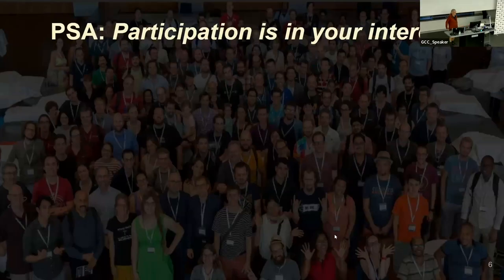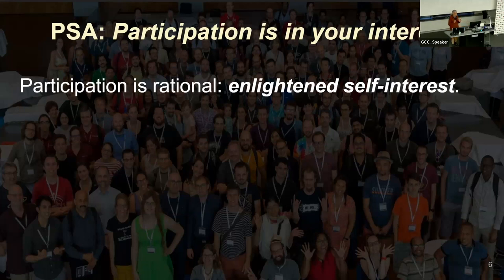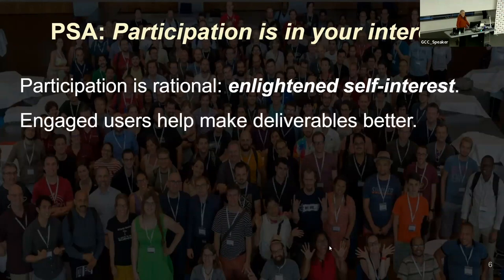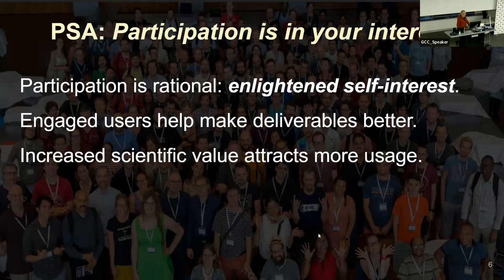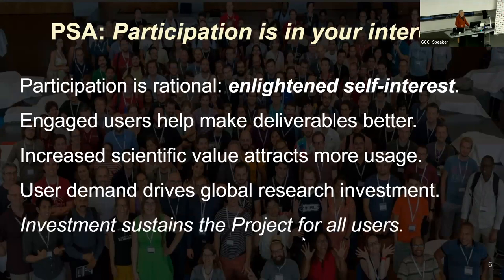Our future sustainability doesn't depend on individual components — it depends on the project infrastructure, which connects all these independent components. None of the independent components has control of the others; no single PI controls all the grants. All that coordination happens at a higher level because collaborators all agree to work through this project entity. Efficient collaboration is surely the major element of our next 18 years. And here's a public service announcement: if Galaxy is useful to you, it's rational to participate. This is enlightened self-interest — if you want to keep using Galaxy, you should become engaged.